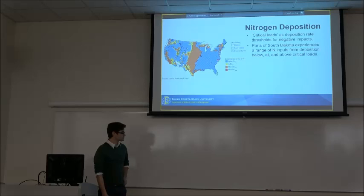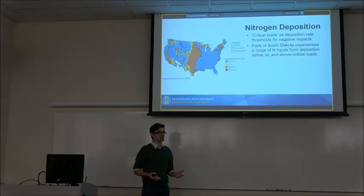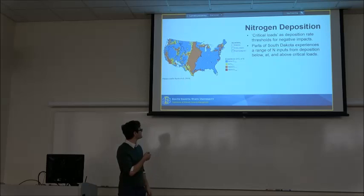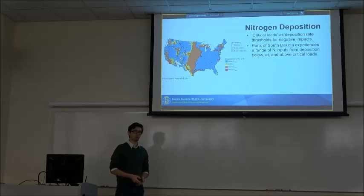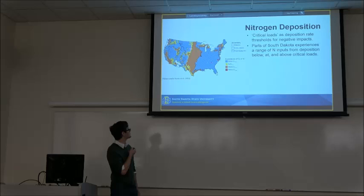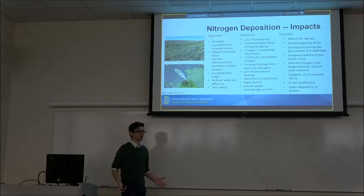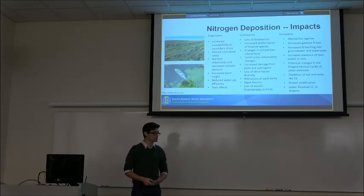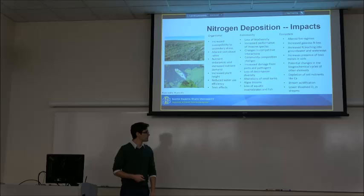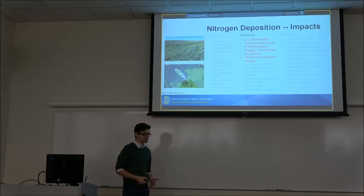Researchers like to use what they call critical loads, which are thresholds above which we would expect to see negative impacts of nitrogen deposition. You can see here in South Dakota that a decent portion of the state falls above the critical load where we would expect to see these negative impacts, a sliver of the state is right at that threshold, and the remainder falls below. These impacts are wide-ranging in scale from the organismal level up to ecosystem levels, impacting everything from fire regimes to organisms' susceptibility to secondary stress and a variety of aquatic impacts. For the sake of this study, I'm generally interested in invasive performance and how that can impact plant community diversity and structure.